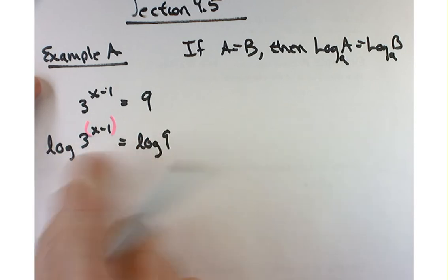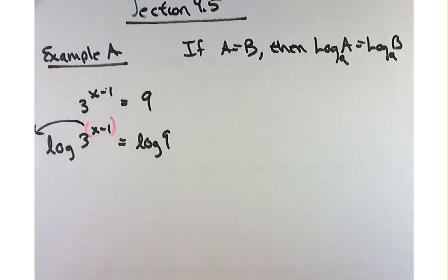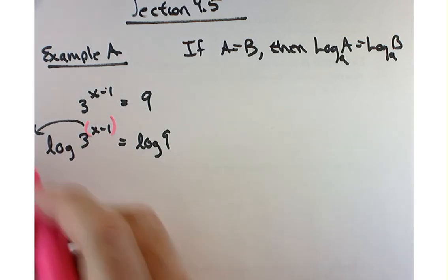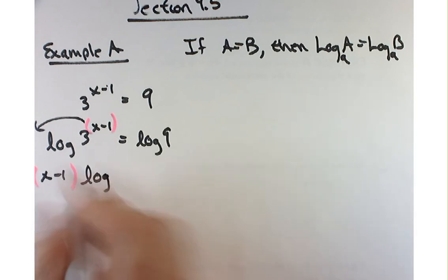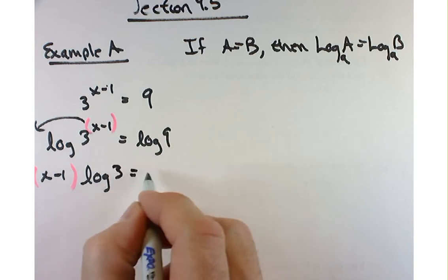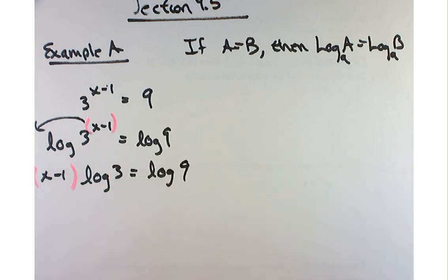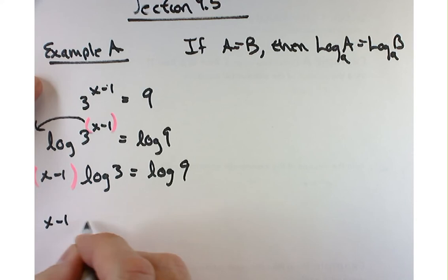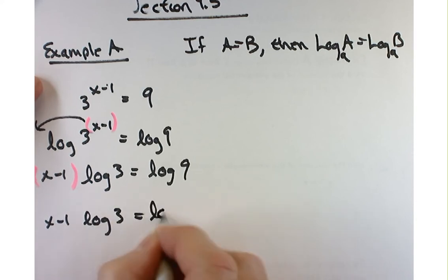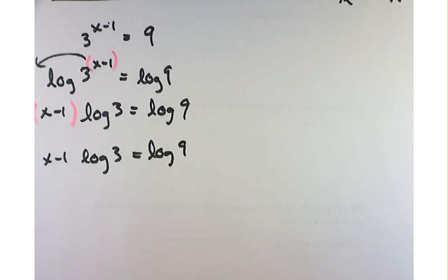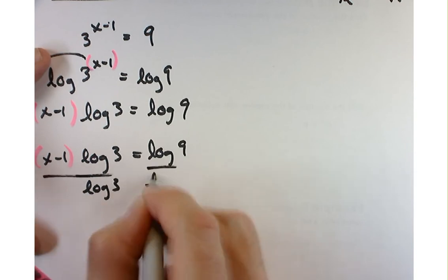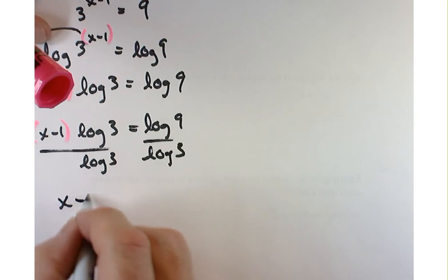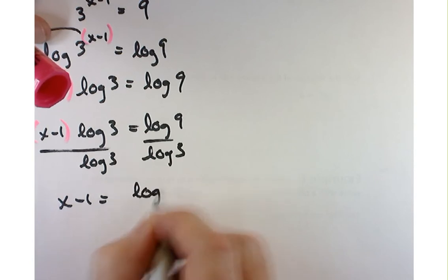When you take log on both sides, that x minus 1 term can come out in front. So I get x minus 1 — and it's important that you write that in parentheses, otherwise it's just a minus multiplying the log. I want to solve for x, so I'll divide both sides by the log of 3. I get x minus 1 equals log of 9 divided by log of 3.